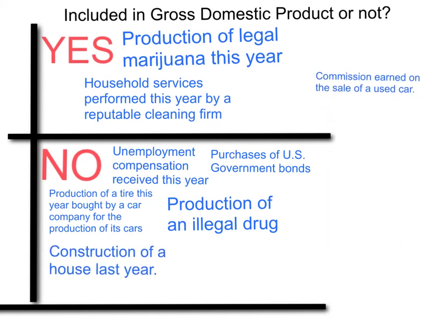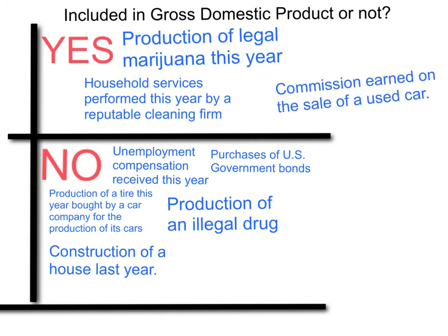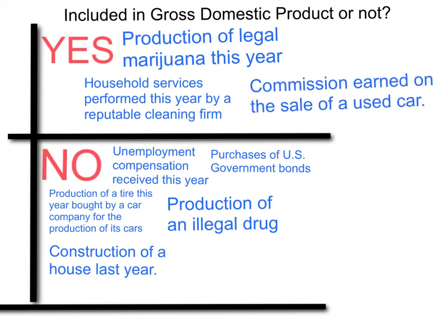Last one: commission earned on the sale of a used car. The car was produced in a previous year, but if it's resold and there's a commission or a fee earned by a used car dealer, and it was earned this year — so if the used car was sold this year — the commission part itself is included in GDP.